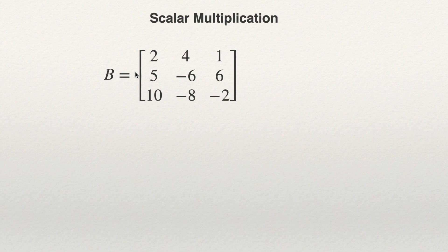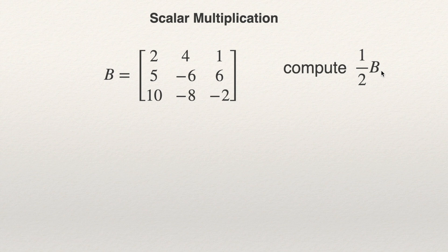Another example. Imagine that we have matrix B: 2, 5, 10, 4, negative 6, negative 8, 1, 6, negative 2. This is a 3 by 3 matrix — it has 3 rows and 3 columns. Somebody asks me to compute one half of B, so one half multiplied by B. The answer will be another matrix. This one half is a scalar, and I'm going to multiply it by B.